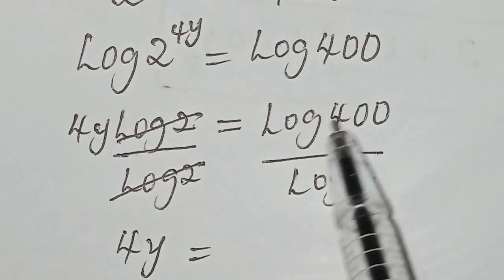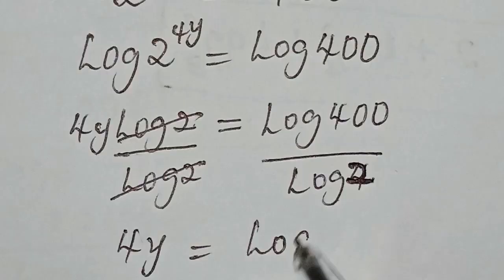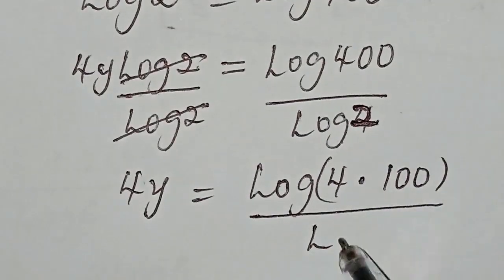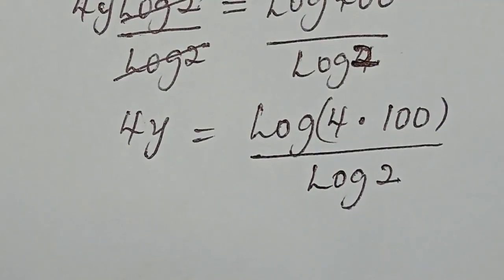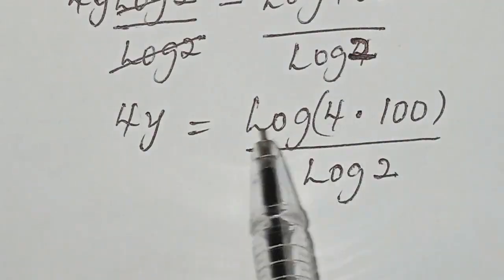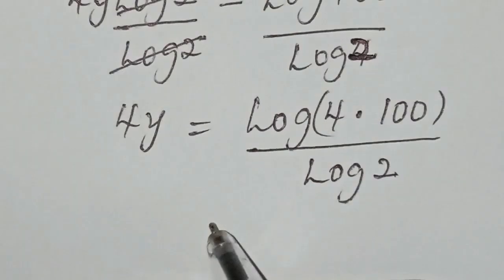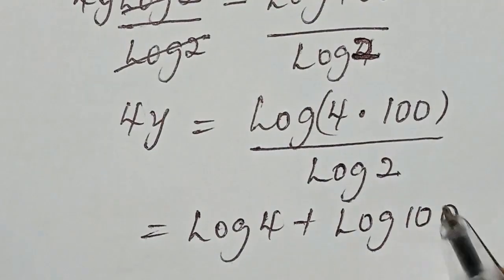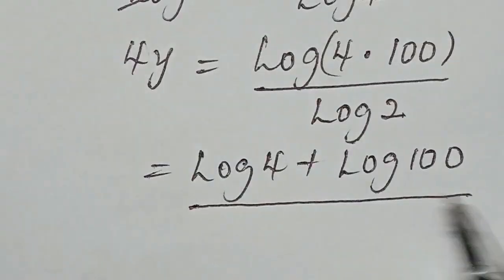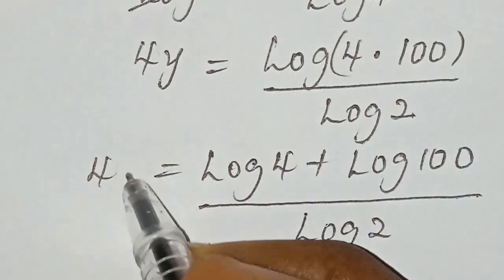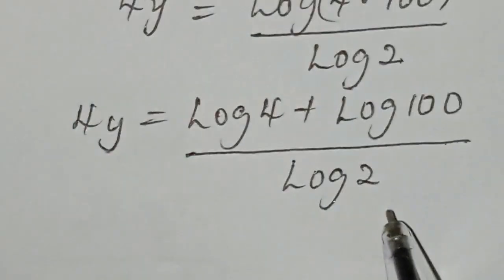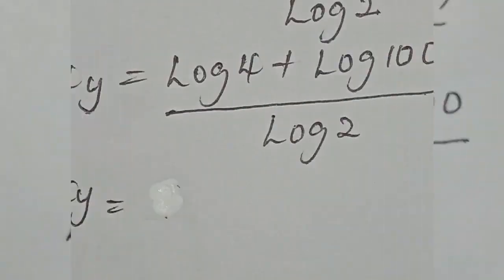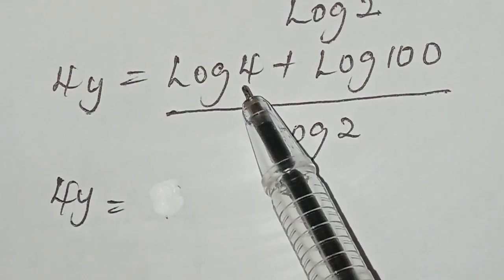Let's simplify 400 log 400. After this we can now apply the log identity of addition. You can as well split log 100. Here we can simplify log 100, likewise log 4.